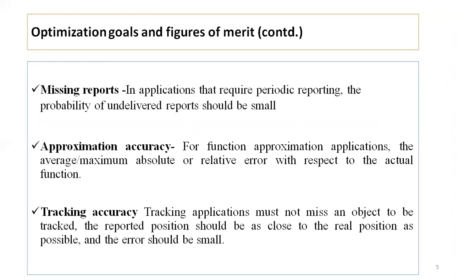The fourth QoS metric is missing reports — if some reports or messages are lost, it affects the goal. The fifth is approximation accuracy: for function approximation applications, the average or maximum absolute or relative error with respect to the actual function must be approximated. The sixth is tracking accuracy: in tracking applications, an object being tracked must not be missed and the error should be small.